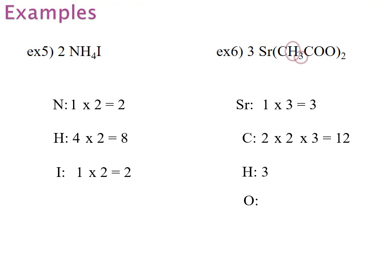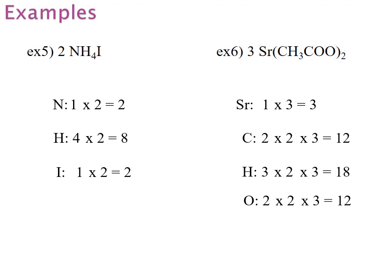Hydrogen: I have 3, inside of brackets, so I have to multiply by 2, and then I will have to multiply by the number that precedes the formula, which is 3, giving me a total of 18 hydrogen atoms. Finally, I have an O and an O, which is a total of 2 oxygens. They are inside the bracket, so they must be multiplied by 2, and then I will multiply by the 3 that precedes the formula, giving me a total of 12 oxygen atoms.